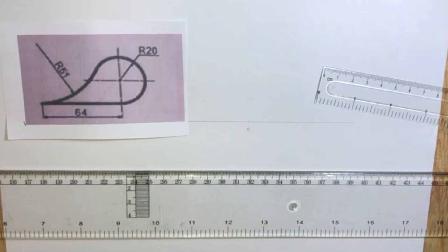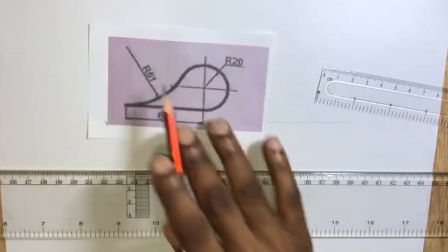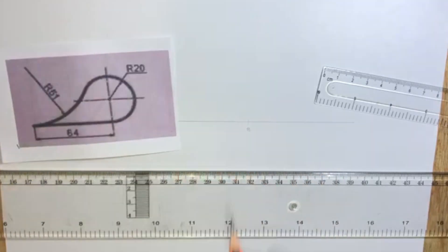Now with a radius of 20 millimeters, we are going to construct this circle at point B.